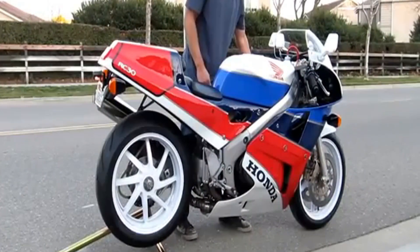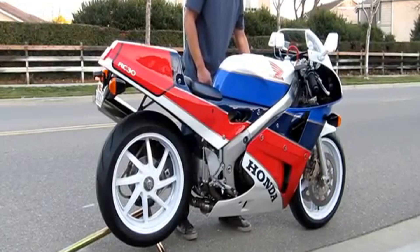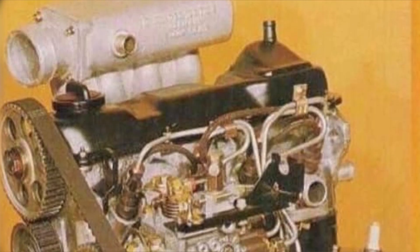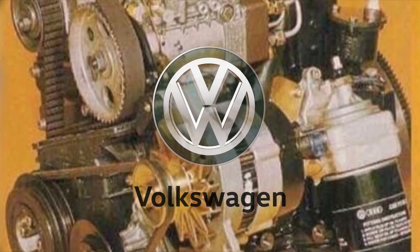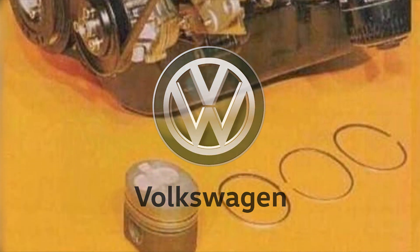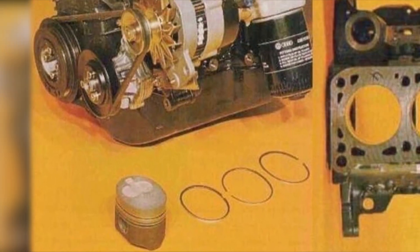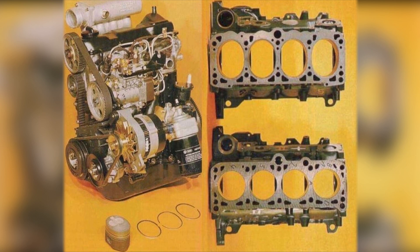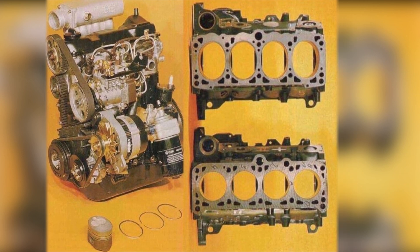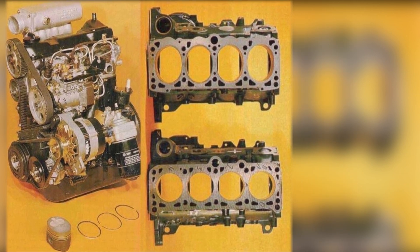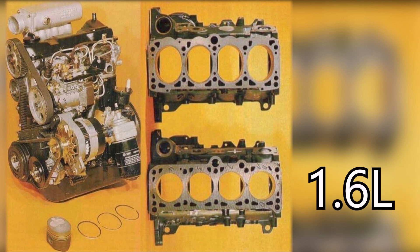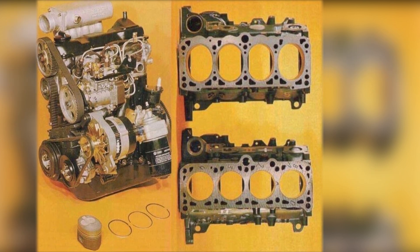It turns out that Volkswagen also experimented with oval pistons in the 90s. In the image, we see two blocks of roughly the same size, but the block with oval cylinders allowed the engine capacity to increase from 1.6 liters to 2.3 liters. This was a diesel engine.